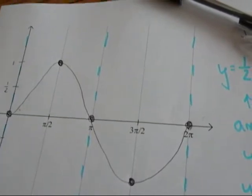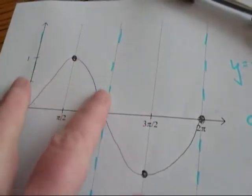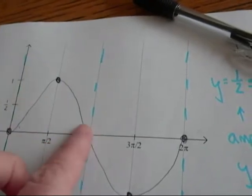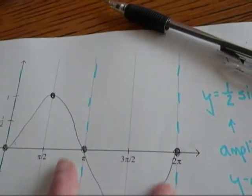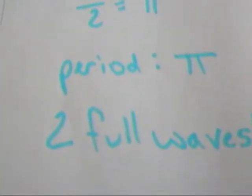And remember, what this tells me is that between these two dotted lines, I'm going to need to see one full wave, and between these two dotted lines, I'm going to need to see another full wave, which is why we'll see two full waves.